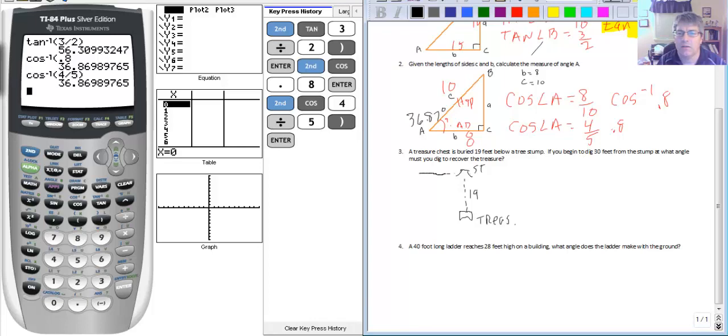So let's head this way 30 feet. And now I need to dig to get at the treasure. So the question is what's this angle between the ground and the angle at which I must dig to get to the treasure?